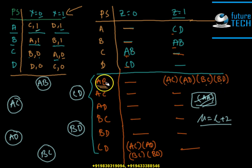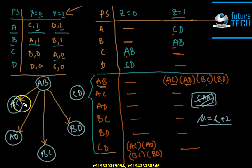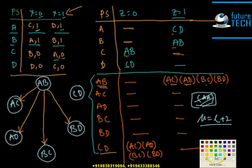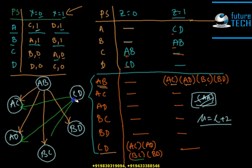The arcs are determined as follows: ab implies ac, ad, bc, and bd, so there are arcs from ab to ac, ab to ad, ab to bc, and ab to bd. Then cd implies ac, ad, bc, and bd, so there are arcs from cd to ac, cd to ad, cd to bc, and cd to bd. I'm using another color to make the information clearer.